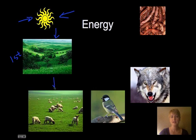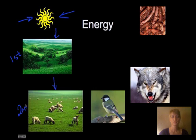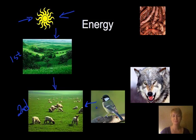Animals and insects eat those plants, so this would be our second level. The second level would be things that eat the plants — these would basically be herbivores. They just eat the plants. Birds would eat berries and nuts and things like that.